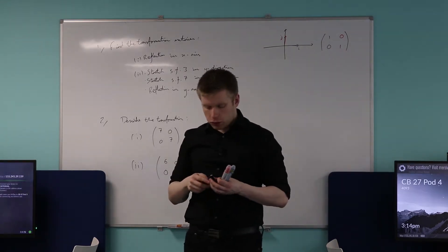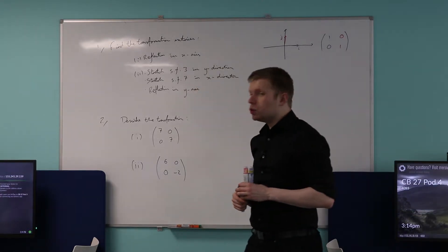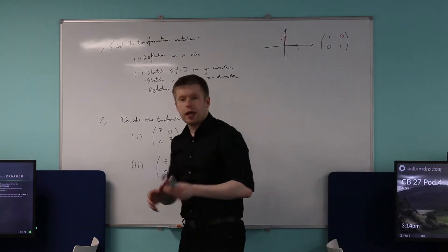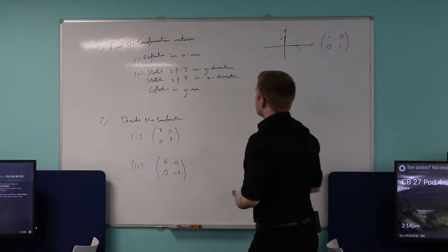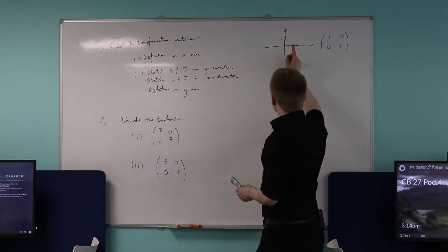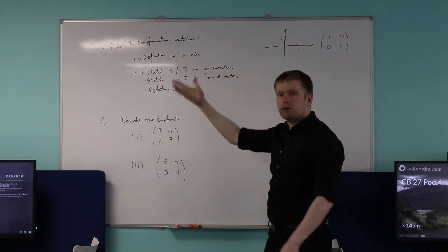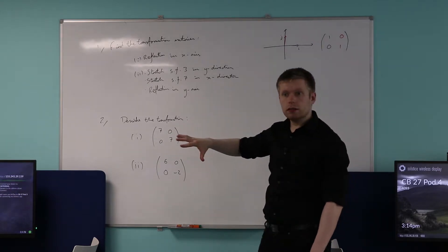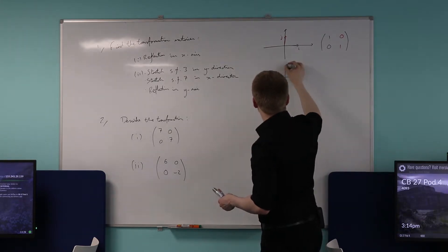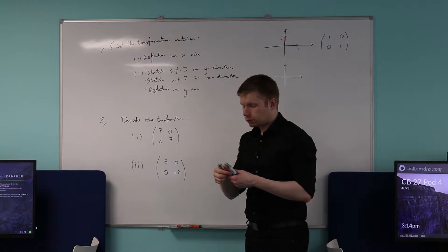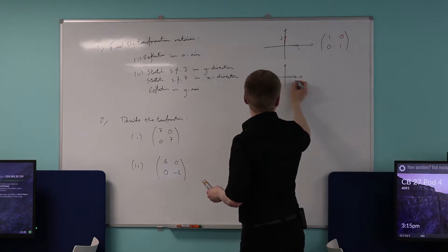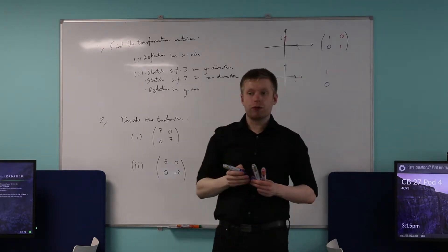The reason it's called the identity matrix is because if you multiply something by it, you get the identical thing back — it's the equivalent of multiplying by one. So if you want to describe a reflection in the x-axis, what you need to do is think about where these vectors will end up after you've reflected them in the x-axis. Where will i end up? It will remain at the same place — i stays at (1, 0).